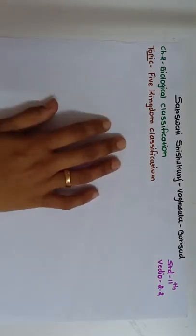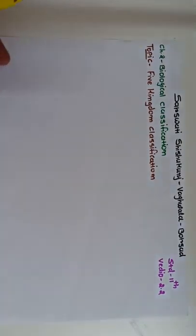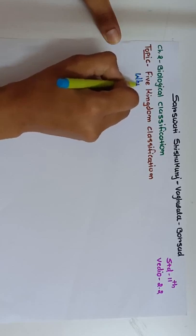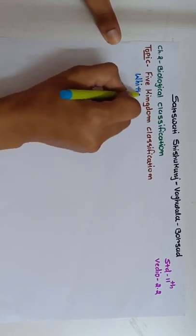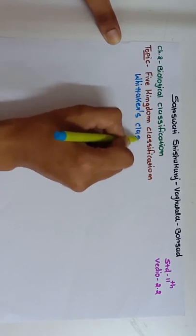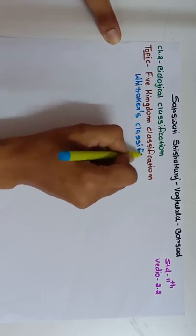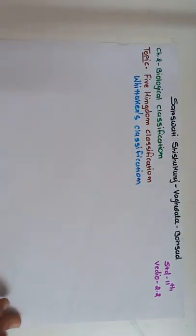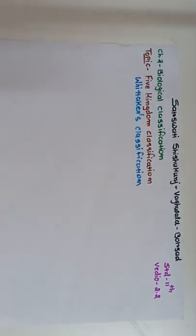In this video, we will discuss about the details of five kingdom classification. It is also known as Whittaker's classification, because five kingdom classification was given by R.H. Whittaker.